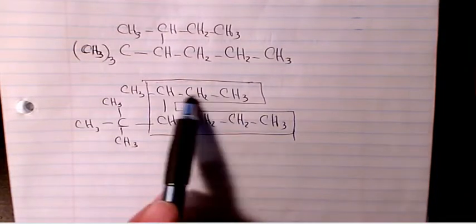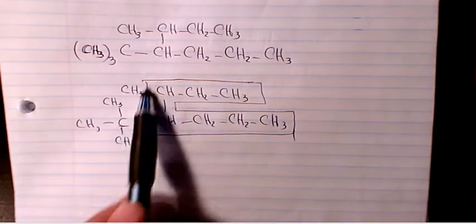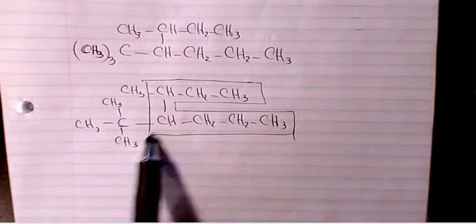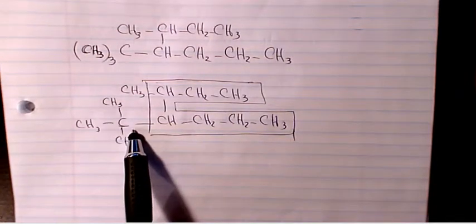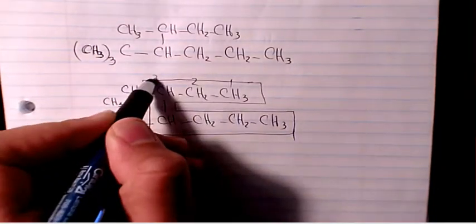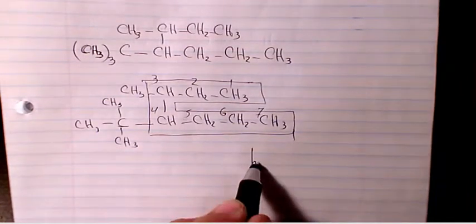So do we need to start from this side or from this side? If you start from this side the first substituent will be on carbon number three. If you start from this side it's going to be on carbon number four. So I need to start from this side, so it would be one, two, three, four, five, six, seven. So it is heptane.